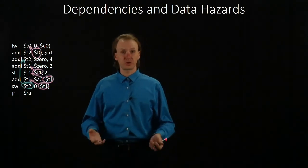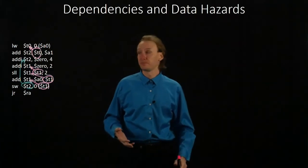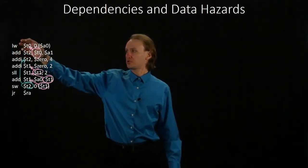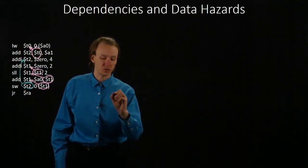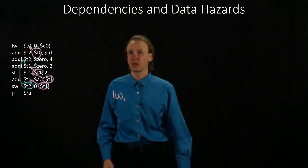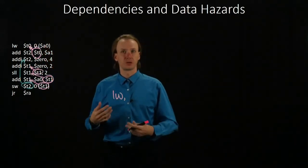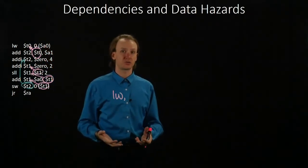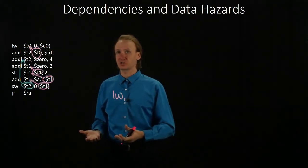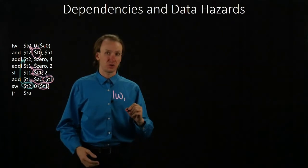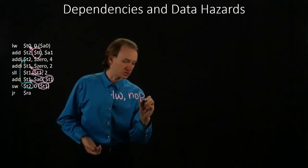So now we'll go through, look for data hazards, and add no-op instructions to avoid those. Since our first instruction doesn't have any dependencies, we don't have any problems just running the load word instruction immediately. But our second instruction is dependent on the first one, so we're going to have to wait two cycles for our load word instruction to complete before we can run our add instruction. Since we don't have anything else to fill those cycles with, we will use no-op instructions.